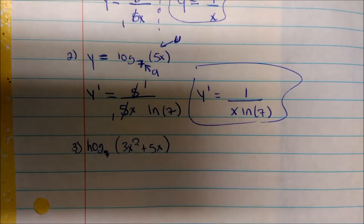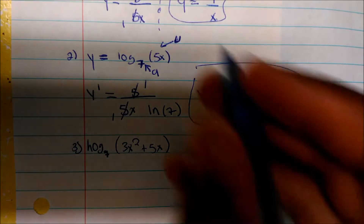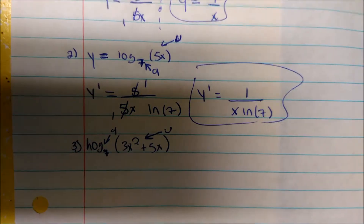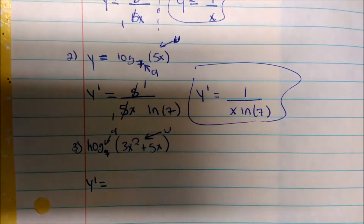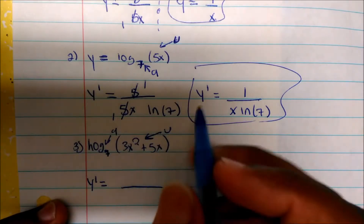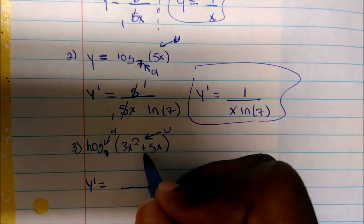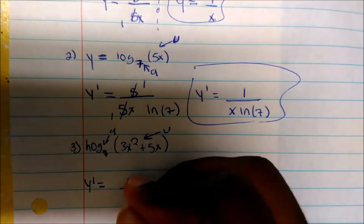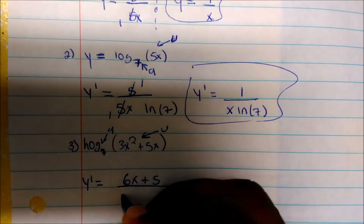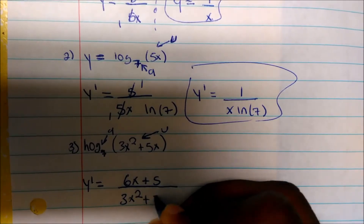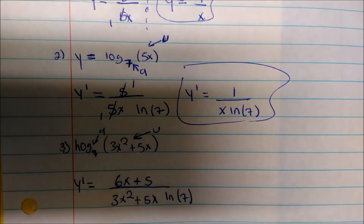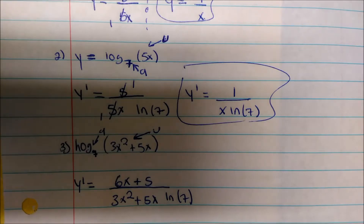How about this one: ln base 7 of (3x² + 5x). This is my u, and 7 is my base, which is my a. My y prime — I'm going to draw a fraction bar. u prime will be on top, so the derivative of 3x² + 5x is 6x + 5. That will all be over u, which is 3x² + 5x, times ln(7) because that's my a. That's what the formula says.